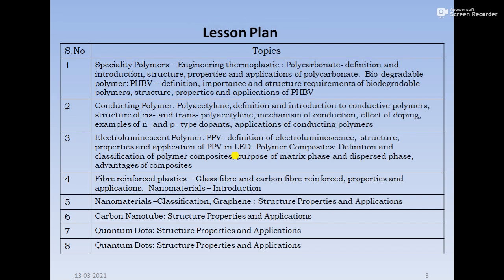This is the lesson plan for the unit. In that we are going to see engineering thermoplastic — the example is polycarbonate — then conducting polymer, in which we will discuss polyacetylene. Next is biodegradable polymer, in which we will see polyhydroxybutyrate. Then next is electroluminescent polymer, in which we will see polyparaphenylene vinylene as an example, and the last polymer topic is polymer composite, in which we will see fibers.